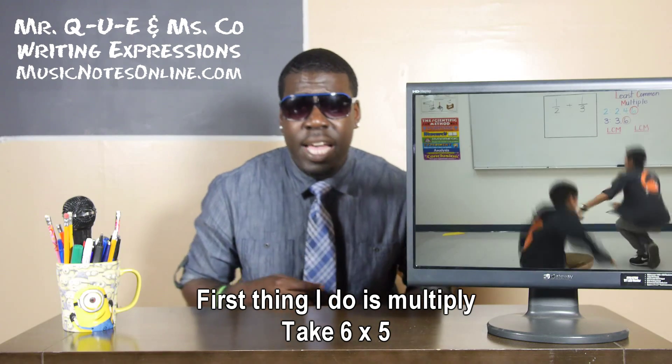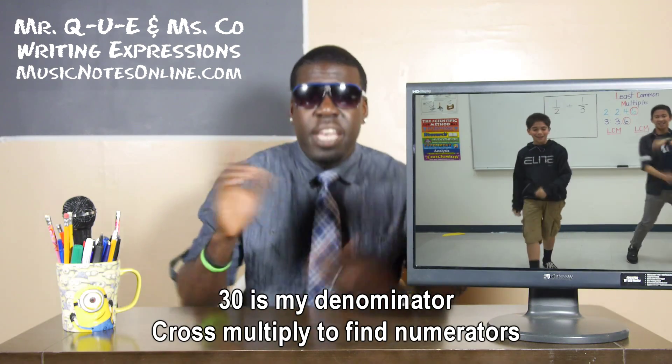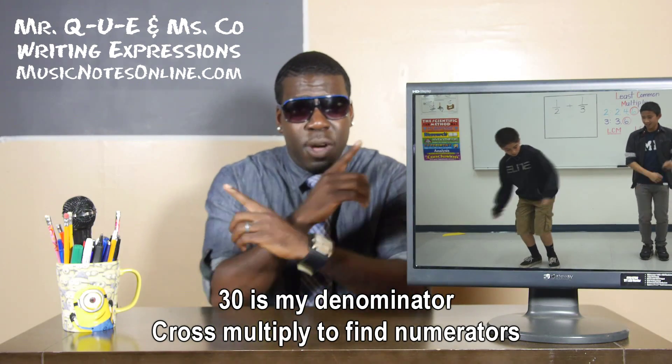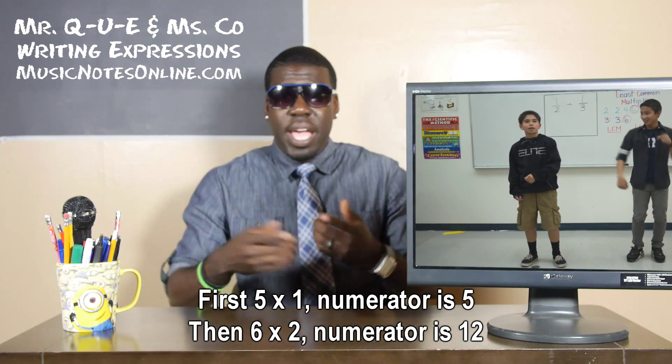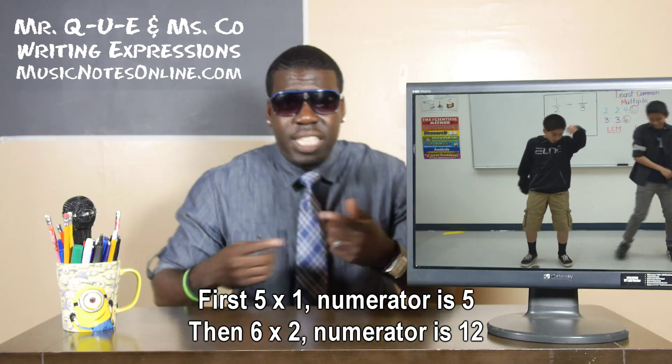First thing I do is multiply. Take six times five. Thirty is my denominator. Cross multiply to find numerators. First five times one. Numerator is five. Then six times two.